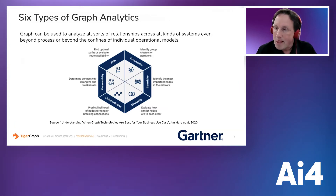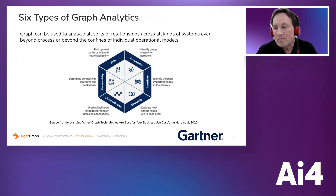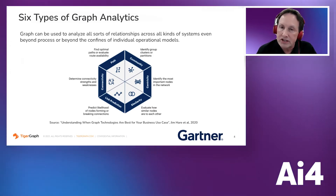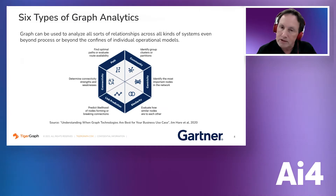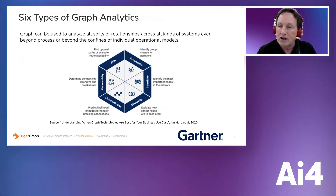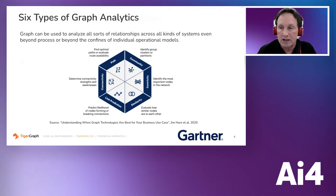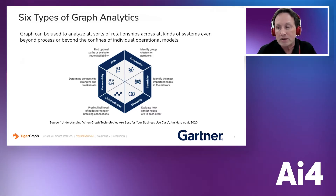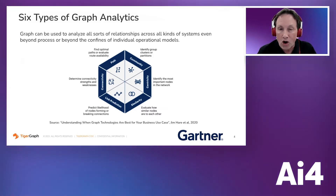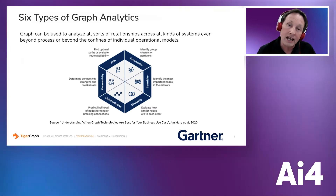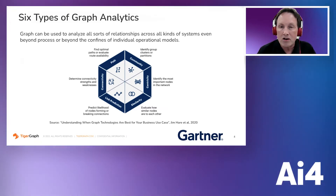Centricity: what are the most important points in the network, either inside a community or outside of it? Similarity: how similar are nodes or groups of nodes in the network? Link prediction: this is all about determining the likelihood of nodes forming or breaking connections. And last but not least, connectivity: how strong are the connections between nodes?